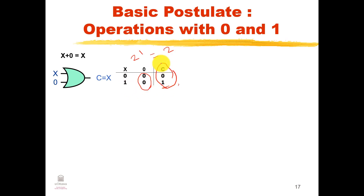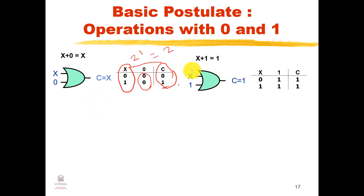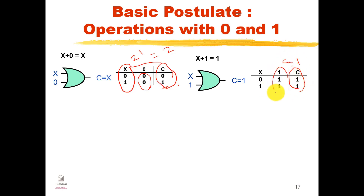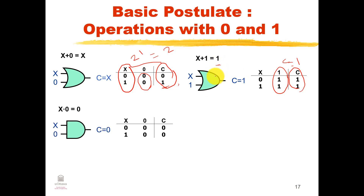For the AND operation: X AND 0 = 0. Zero AND zero equals zero, one AND zero equals zero, so C equals zero at all time. For X AND 1 = X: zero AND one equals zero, one AND one equals one, so C equals X at all combinations.